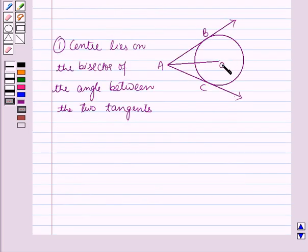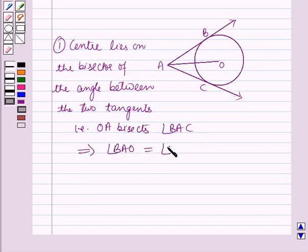That means that if O is the center of the circle and AB and AC are the tangents, then O will lie on the bisector of the angle BAC. That is, OA bisects angle BAC.